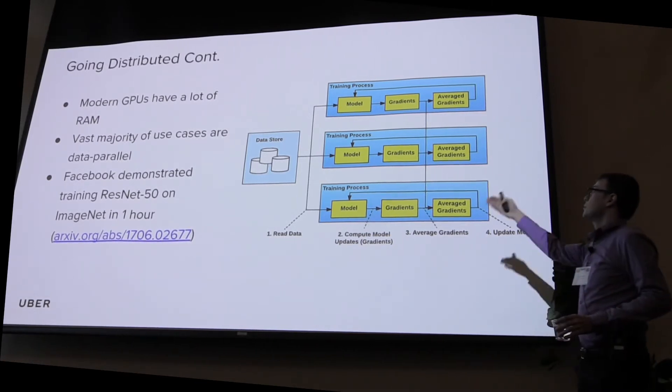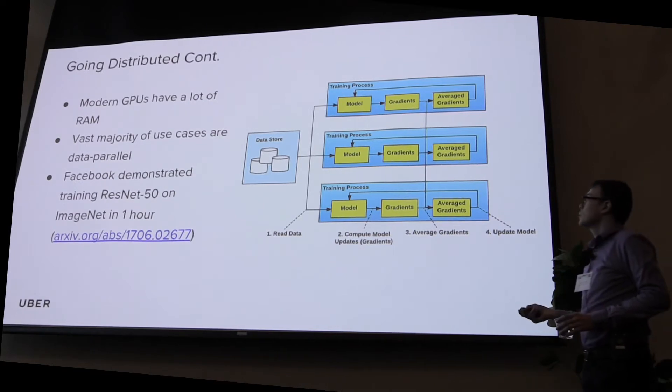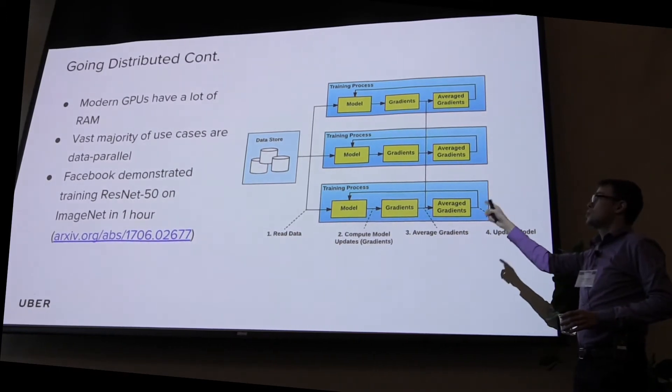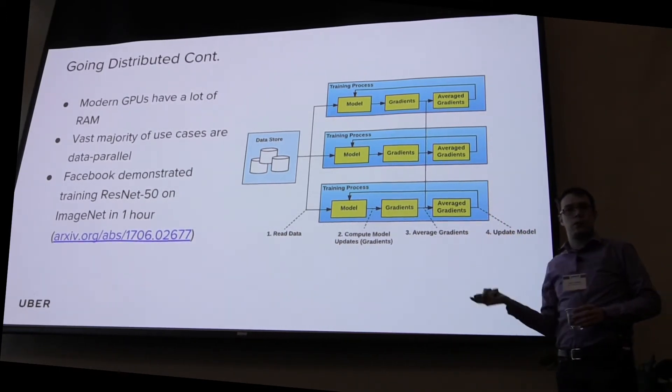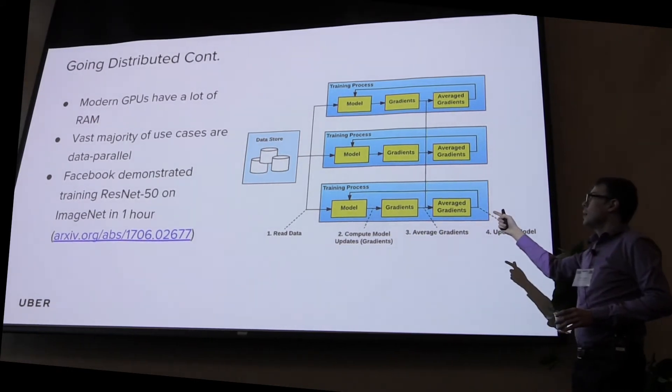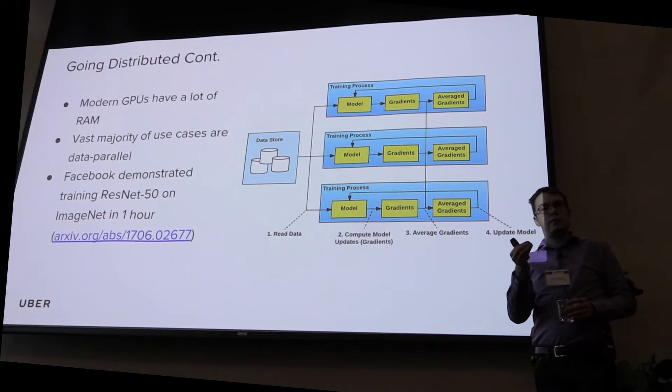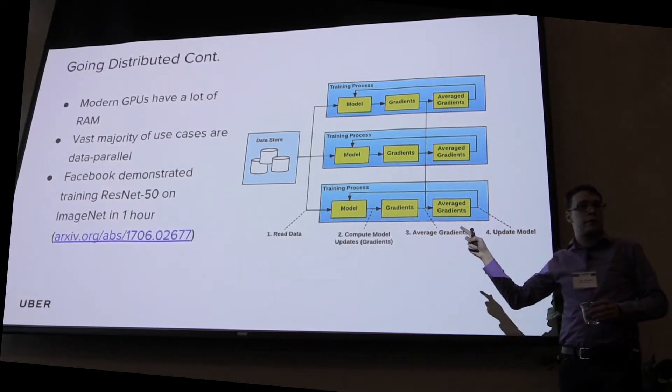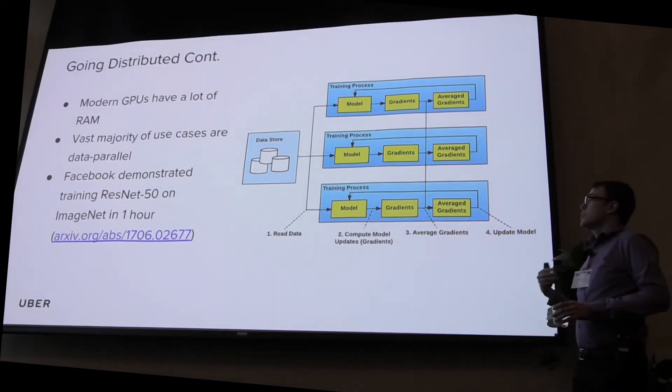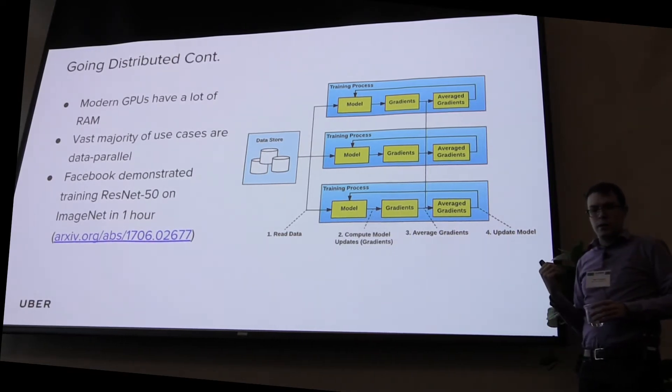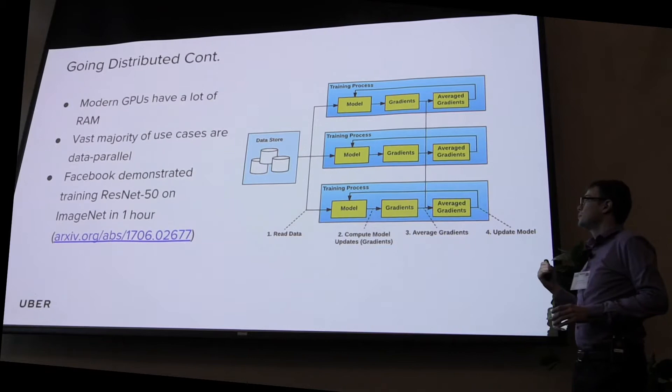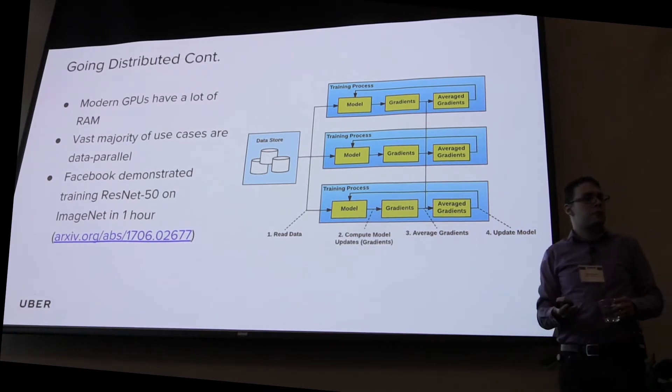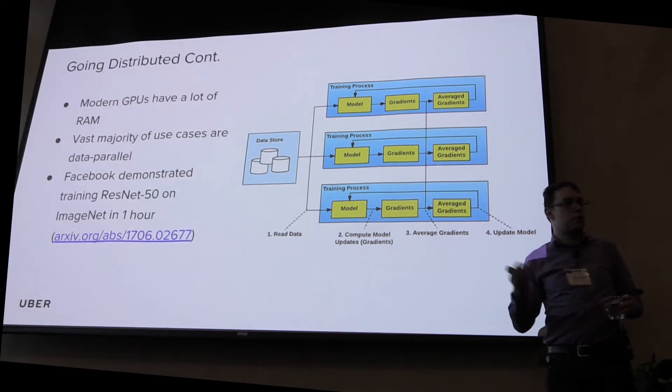So here on the right, there is a diagram showing how distributed data parallel training works. Basically, you have multiple training processes. Every process would ingest portion of the data, run model computation. And then for every process, you would compute gradients based on that data that you read. And then afterwards, you average gradients, and you apply those average gradients to the model, and you repeat this iteration. So as I was saying before, if your model is a few gigabytes, and you're doing this update every second, and let's say you have 100 servers, this becomes an HPC problem, because you have a few gigabytes that you need to exchange every second.